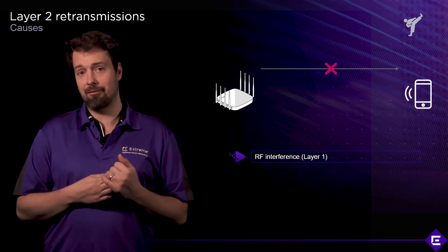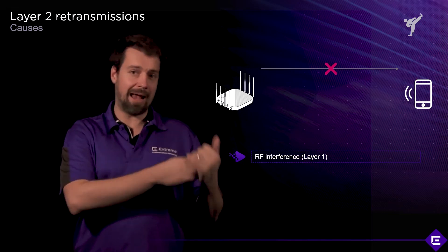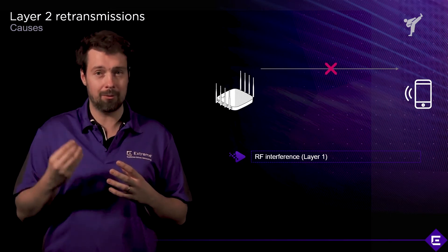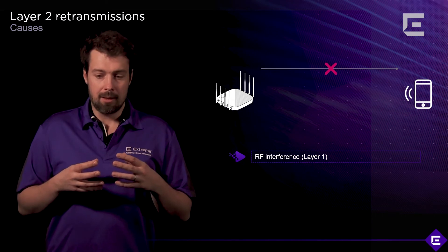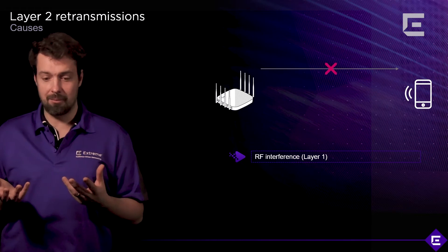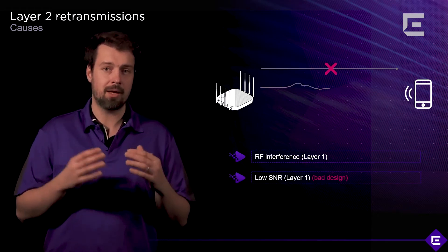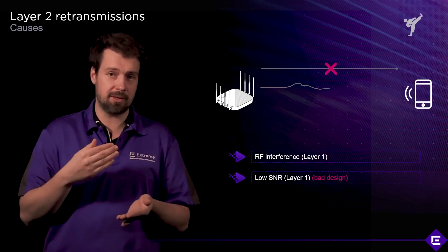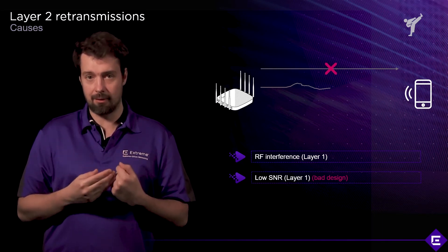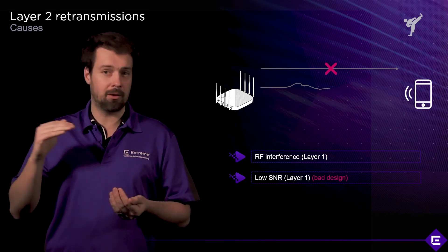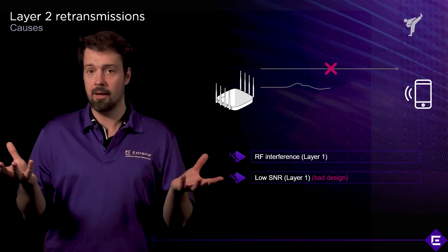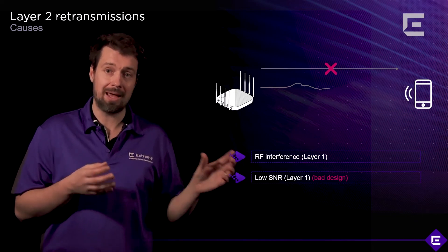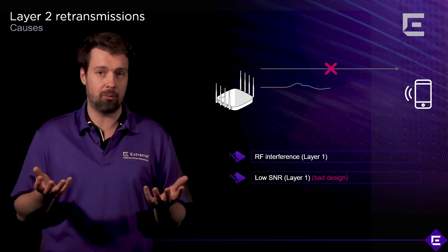The other reasons why you might have layer two retransmissions have less to do with actual interference and more with bad design. A layer two retransmission can result from an interferer, but it can also indicate the design itself is not good. One reason is low SNR — low signal to noise ratio — which makes it very difficult for a station to hear and decode the other station's signal. Low SNR results from bad Wi-Fi design: maybe the noise floor wasn't accounted for, power settings are wrong, the RRM algorithm went haywire, or the lowest performing device wasn't used as a reference when designing the network.